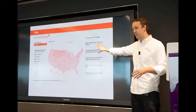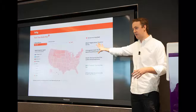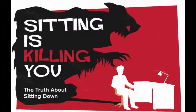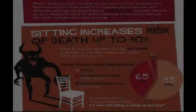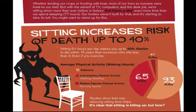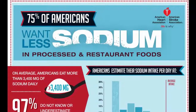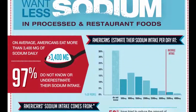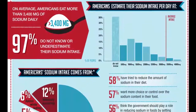A persuasive visualization presents data in order to advance an argument. The visualization might directly state the argument, such as the visualization arguing that sitting is killing you, featuring statements such as "sitting increases risk of death up to 40%." Or the visualization might be more subtle in its persuasion, such as this visualization from the American Heart Association that advances an argument for limiting sodium in restaurant food.